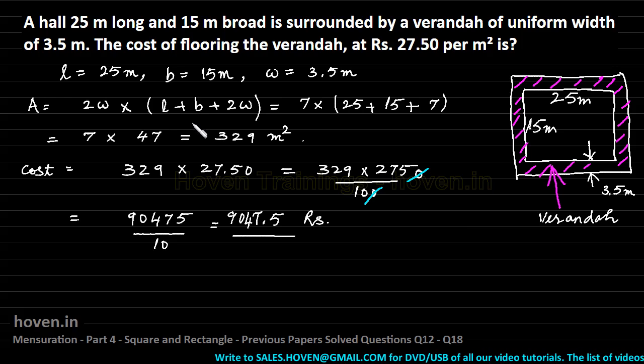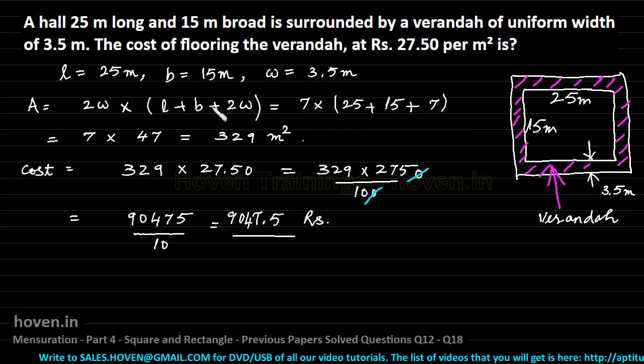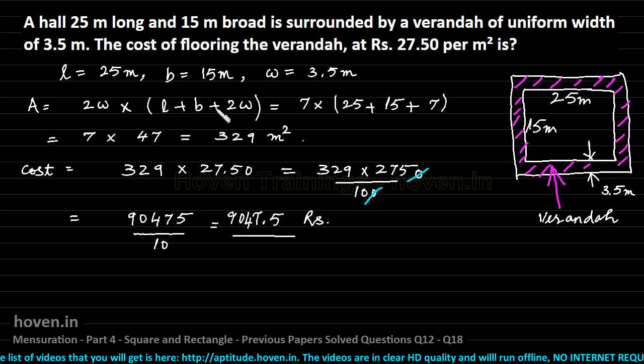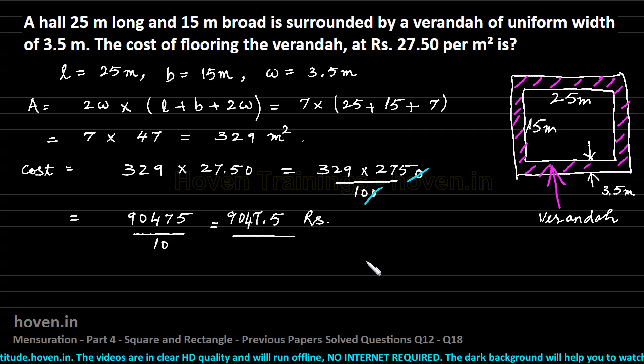In case the veranda had been on the inner side then the only change to the formula is that this will be minus 2w. You can see my earlier videos. The sole summary is that in case the veranda of width w is inside the rectangle, then only change is that this plus changes into minus. The formula remains 2w into l plus b minus 2w. Let us move on to our next question now.